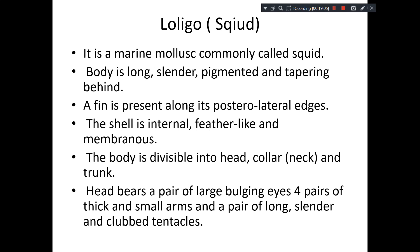Unusual compared to most molluscans, it has a fin at the posterolateral edges. It does have a shell, but the shell is internal — very light, feather-like, and membranous. The Loligo body can be divided into head, collar, and trunk, or head, neck, and trunk.